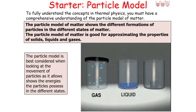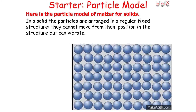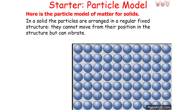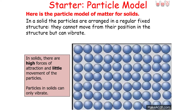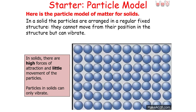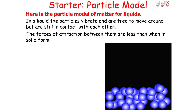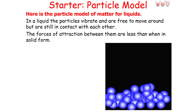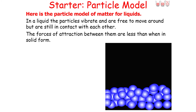Let's recap the particle model of matter. In a solid, the particles are arranged in a regular fixed structure. They can't move from their position, but they can vibrate. In solids, there's a high force of attraction between the particles but little movement — particles in solids only vibrate. In a liquid, the particles vibrate and are free to move around, but are still in contact with each other. The forces of attraction between them are less than when they're in a solid form.